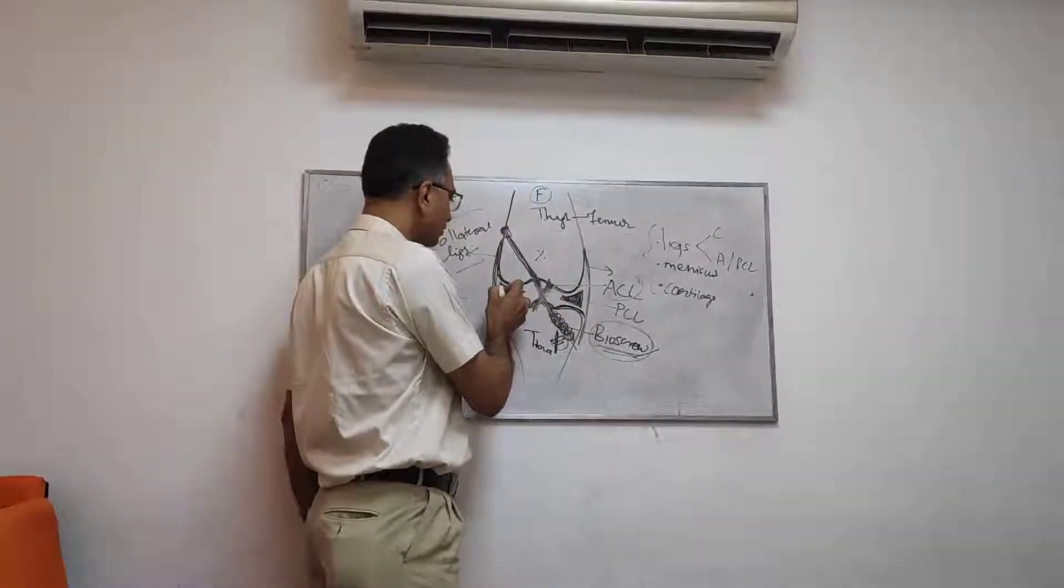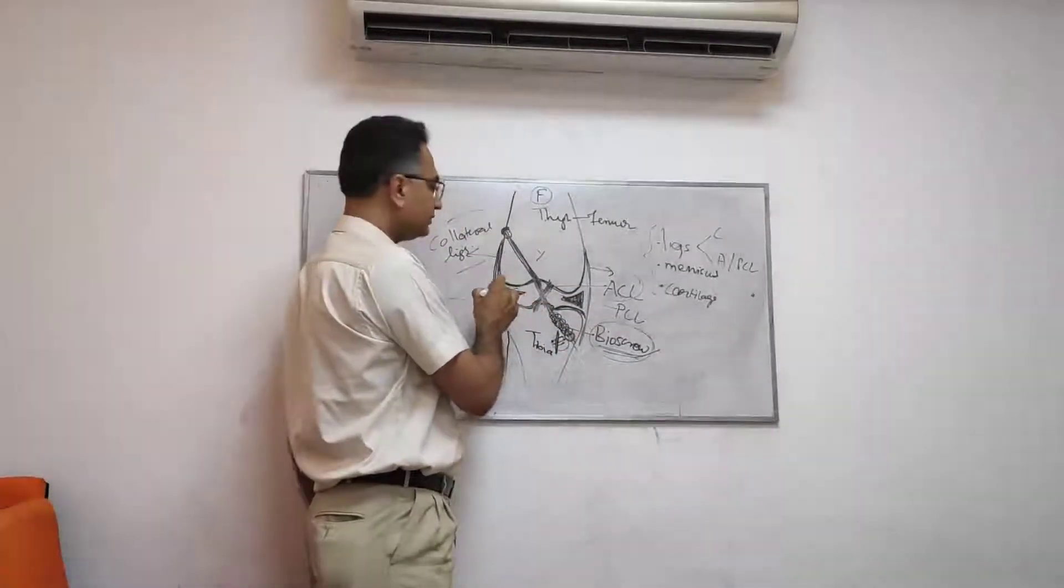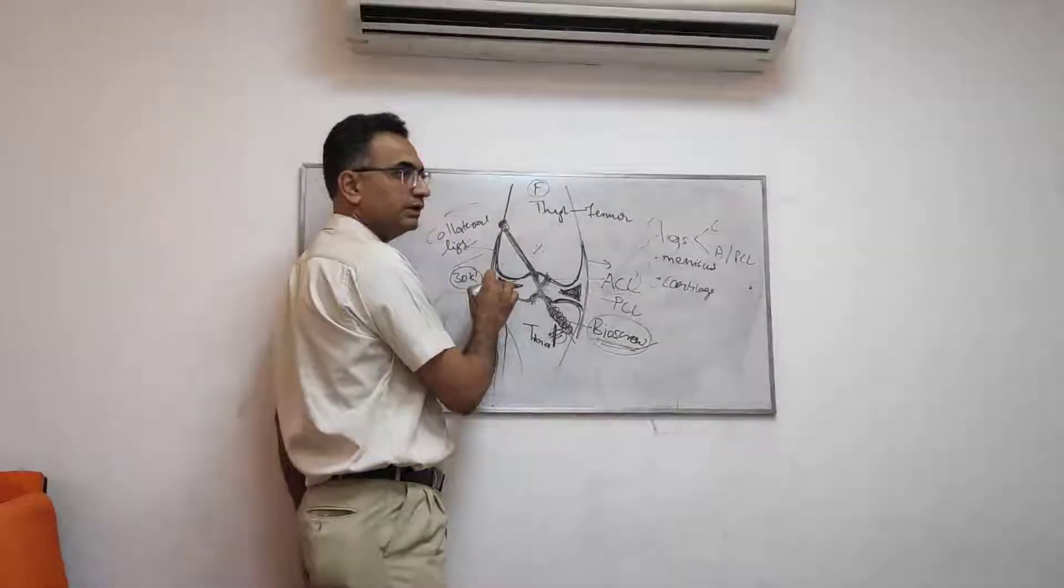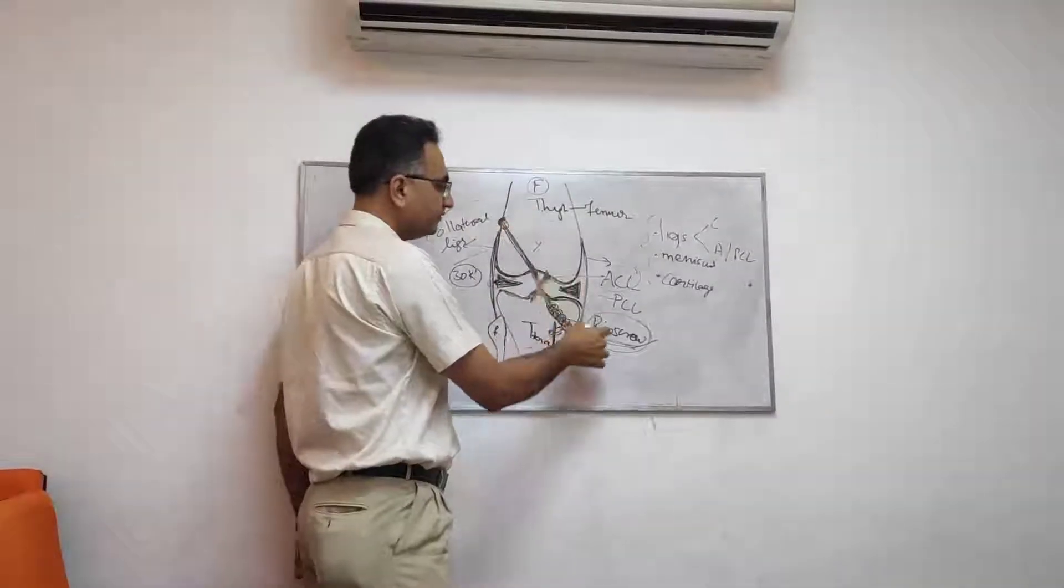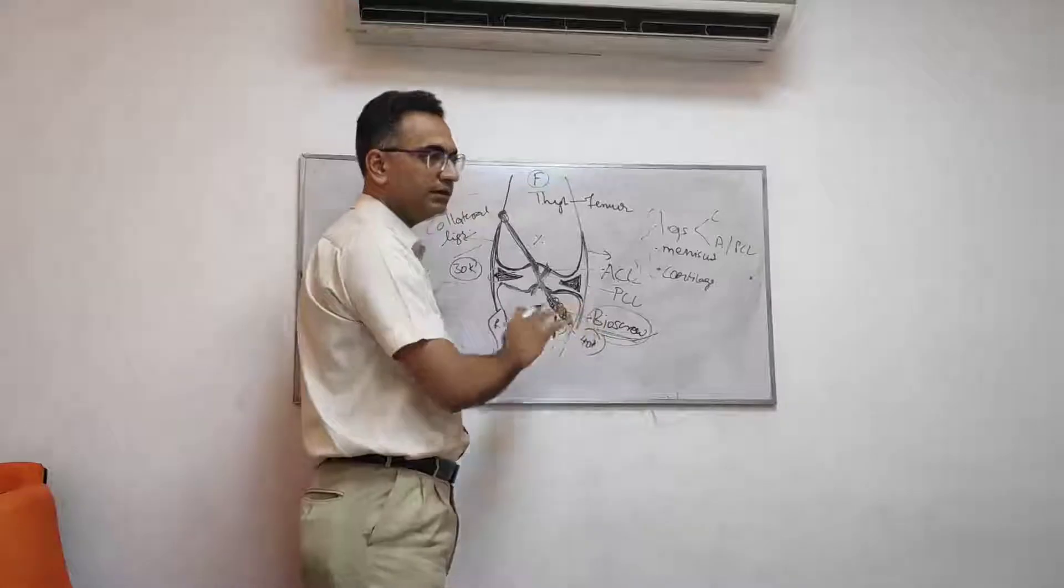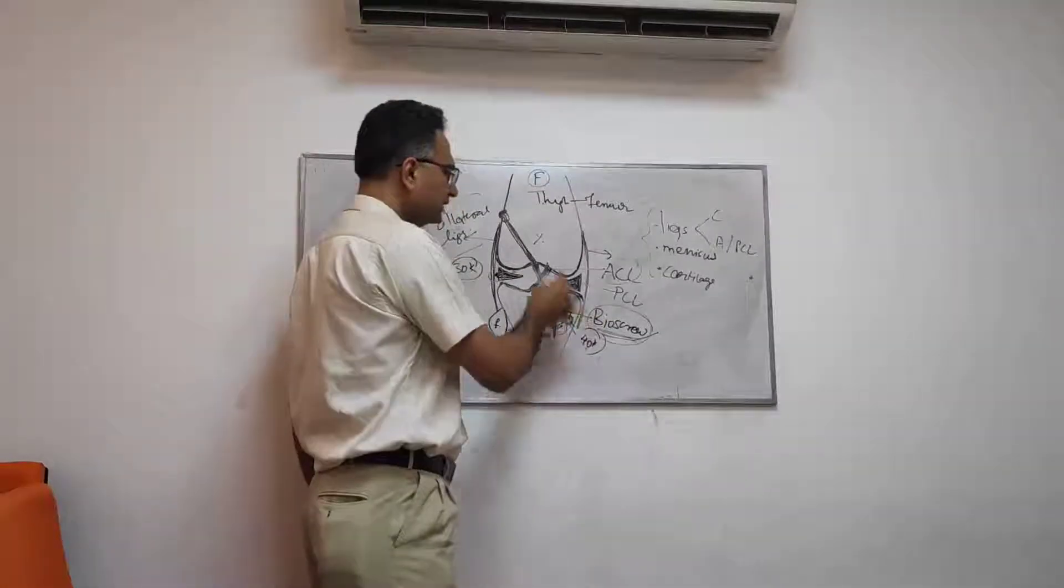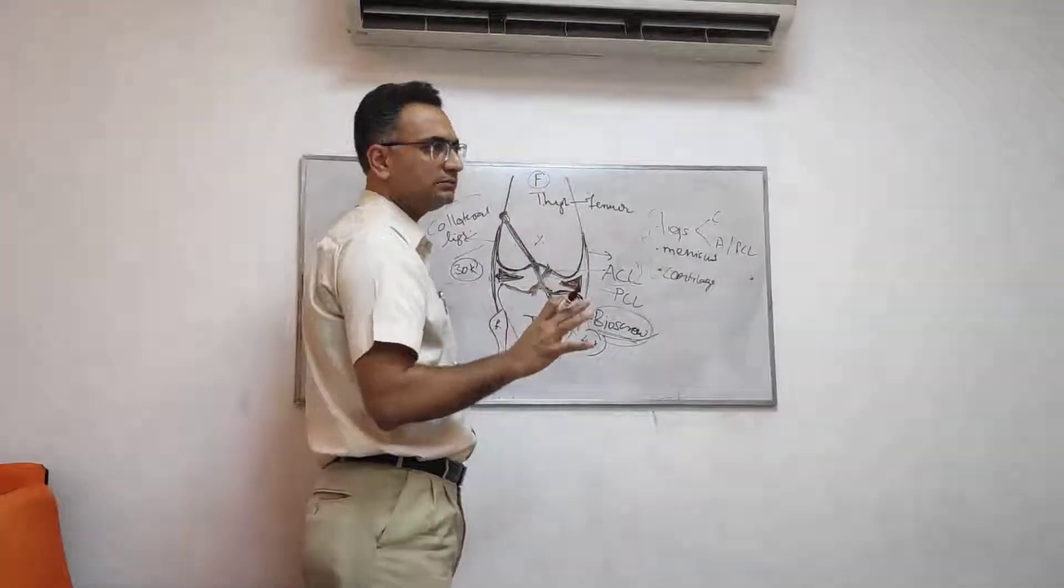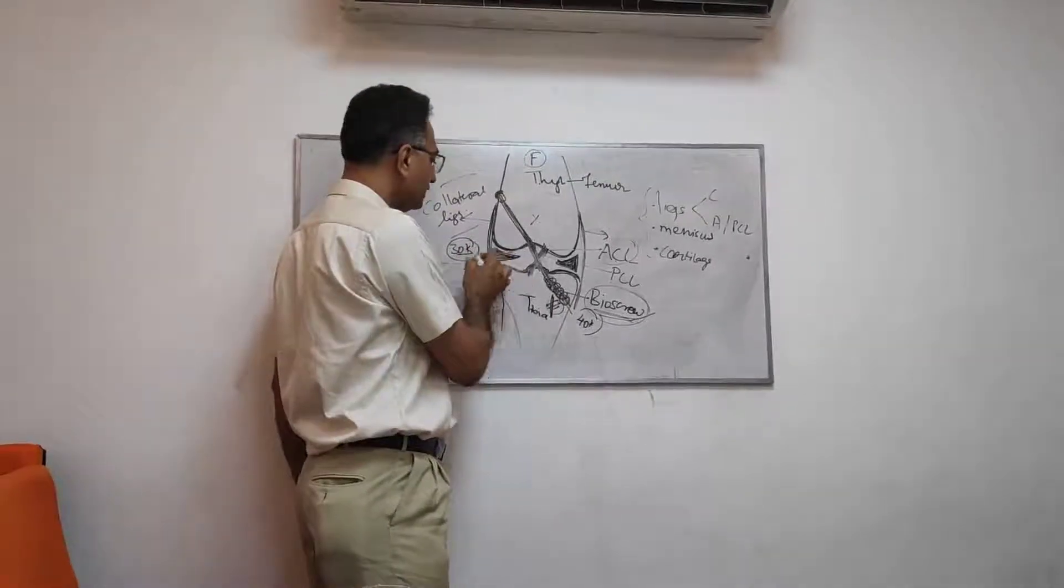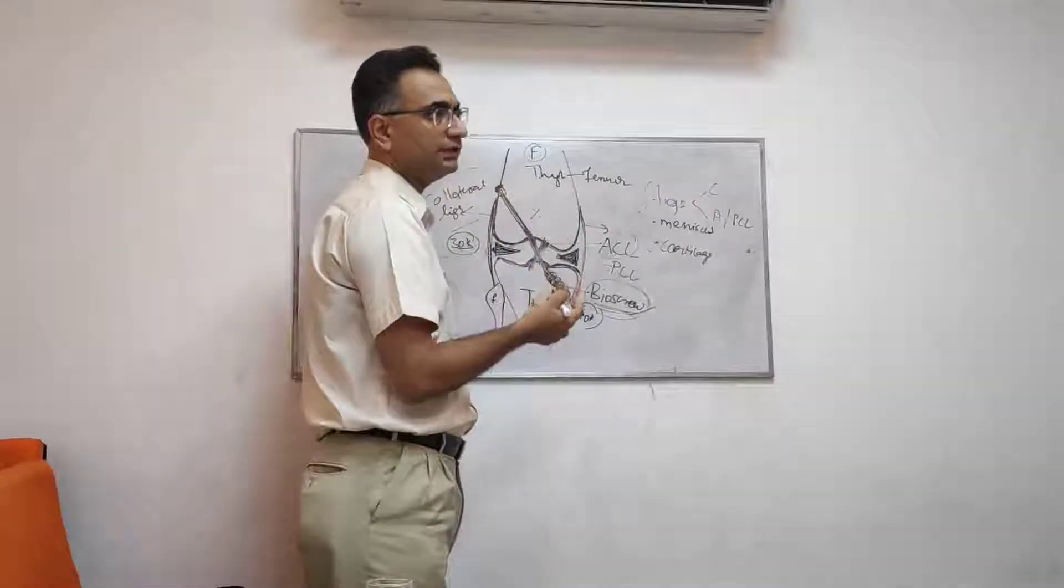Again the cost here then increases because this in the Indian market comes around 30k for one single button and this costs somewhere around 40k in the Indian market without markup for the Indian patient. So somewhere this is what the broadly the cost is spread around. If you use a single implant it's around 30k, if you need two then again 30k, the cost might increase.